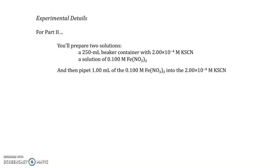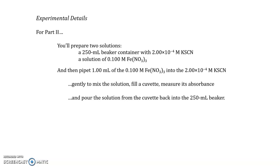You'll then pipet 1 milliliter of the 0.1 molar iron(III) nitrate into the beaker containing the 2×10⁻⁴ molar potassium thiocyanate. You'll gently mix the solution through swirling, fill a cuvette with the solution, and then measure its absorbance using the SpectroVis probe. Upon measuring the absorbance, you'll pour the solution from that cuvette back into the beaker with your mixture.